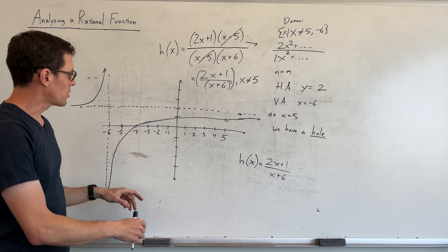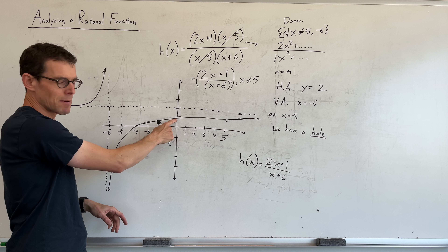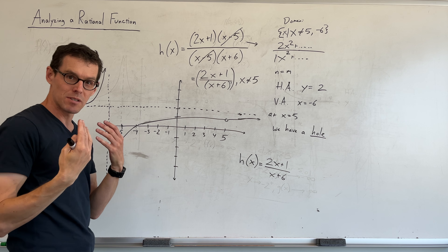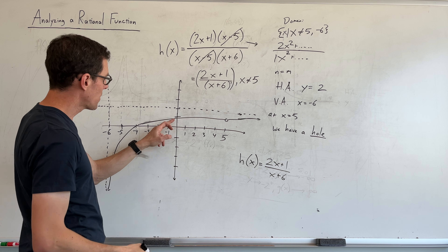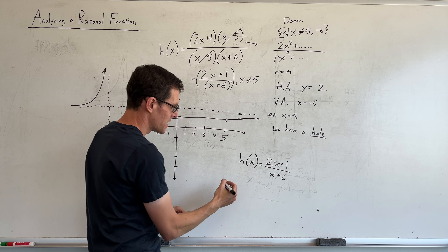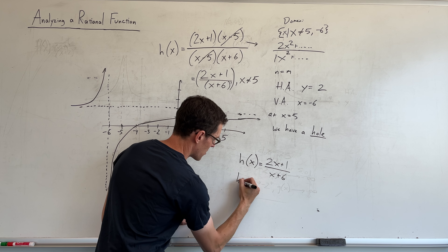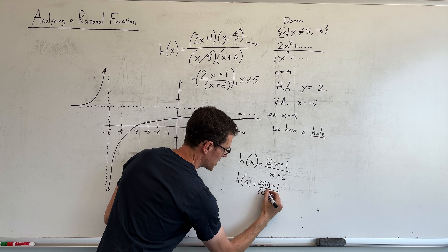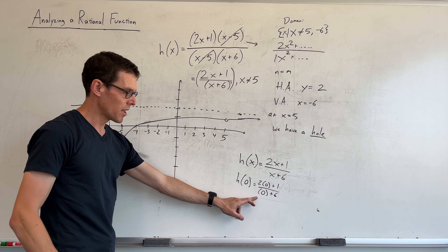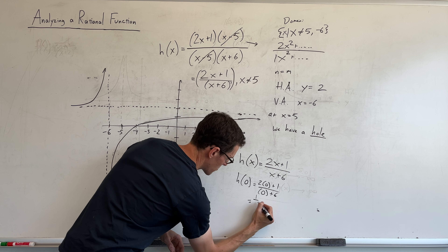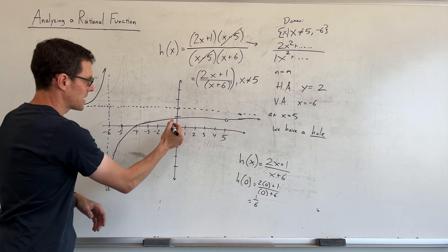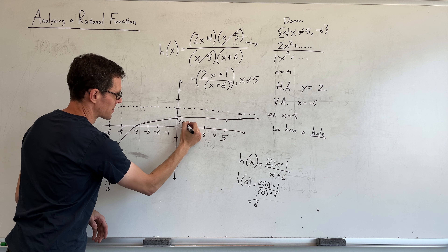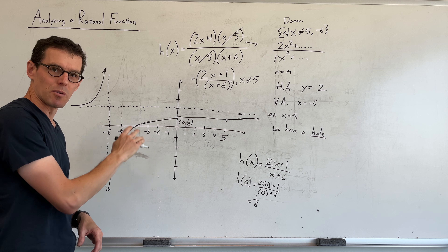The graph seems to cross the y-axis somewhere and cross the x-axis somewhere, so there are intercepts. How do you find the y-intercept? By definition, that's when x is 0. So we compute 2 times 0 plus 1 over 0 plus 6, which is 1 over 6. So the y-intercept coordinate is 0, one-sixth. My drawing isn't perfectly representing 1/6, but that's the y-intercept algebraically.